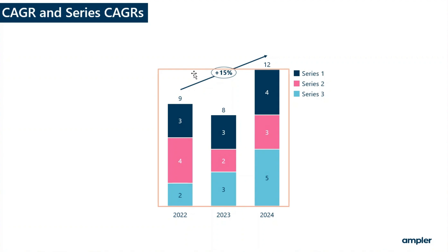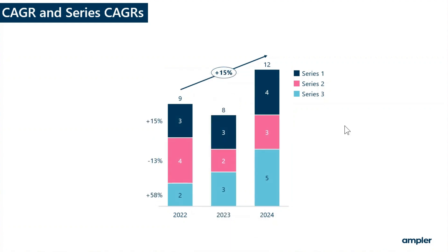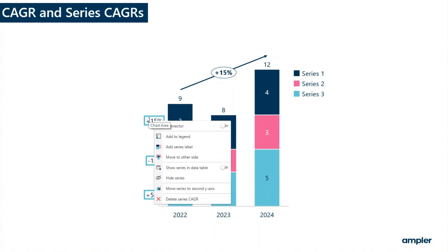To add a series kegger, right click on the chart and toggle on series keggers. If your chart has a legend, you can also have the series kegger shown in the legend. Simply right click after having selected the labels and hit add to legend.